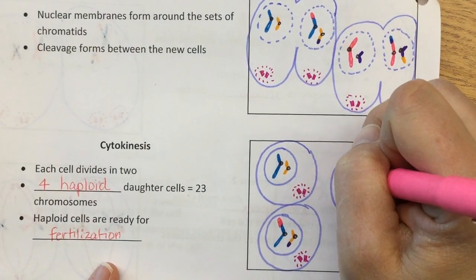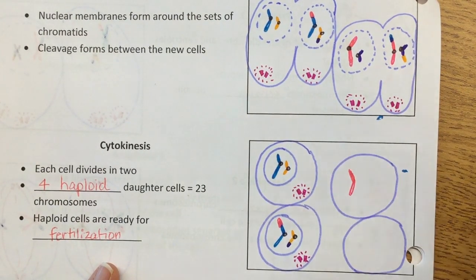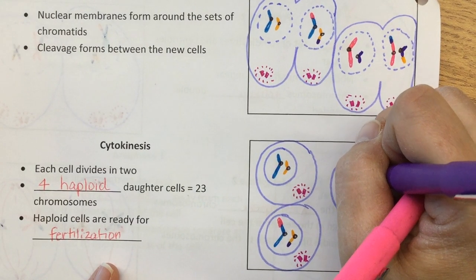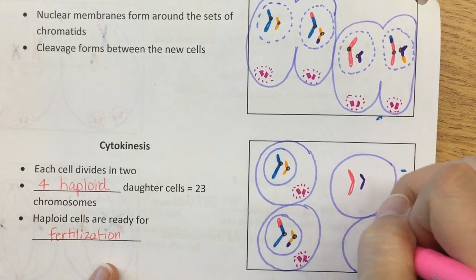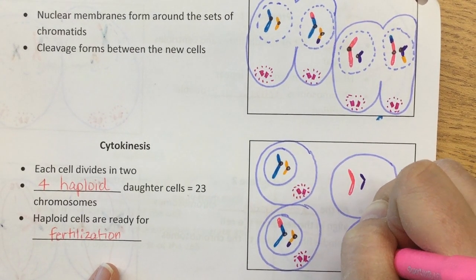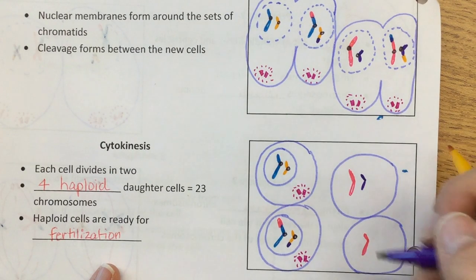So now we have the pink and the purple, the pink and the purple set, and then on the bottom we have the pink with some blue and the purple with some yellow.